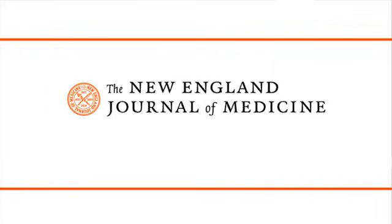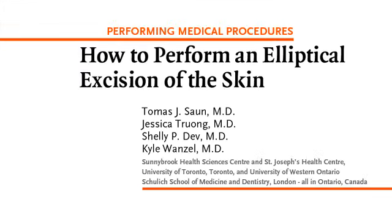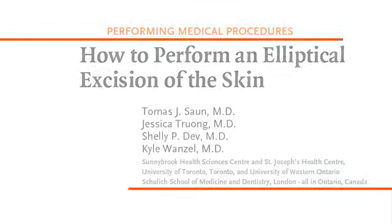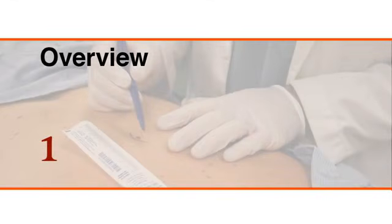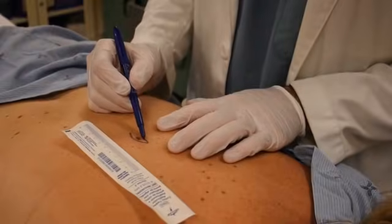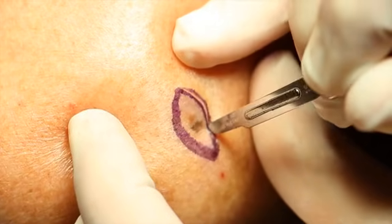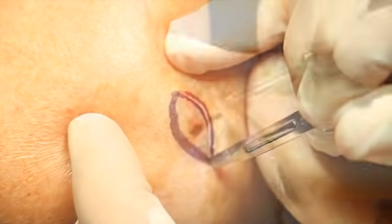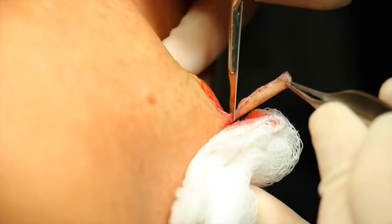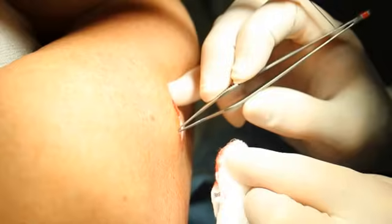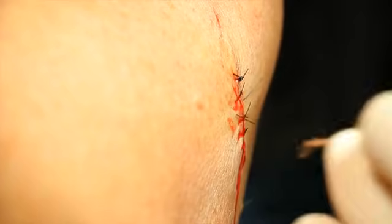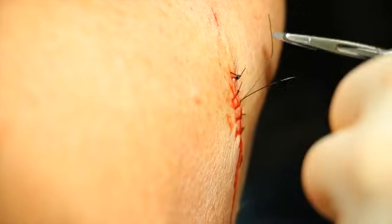This is a video in clinical medicine from the New England Journal of Medicine. Elliptical excision of the skin is an essential procedure used for the diagnosis and management of skin and subcutaneous lesions. It can be performed with minimal risk in most patients and may avert the need for other more invasive procedures. Careful technique is necessary to achieve a cosmetically acceptable linear scar and to reduce the risk of complications.